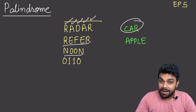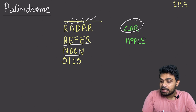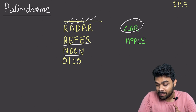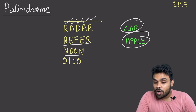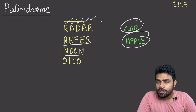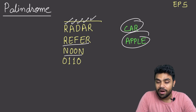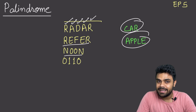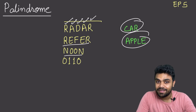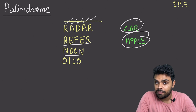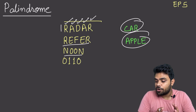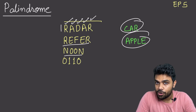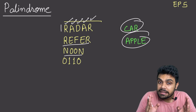Car is not a palindrome because the reversal of car is 'rac'. The reversal of apple is 'elppa'. So these are not palindromes. Now we have to evaluate whether a string is a palindrome or not. One very simple way is, if you know how to find the reverse of a particular string, you will be able to do it very easily. We will cover finding the reverse in the next lecture.